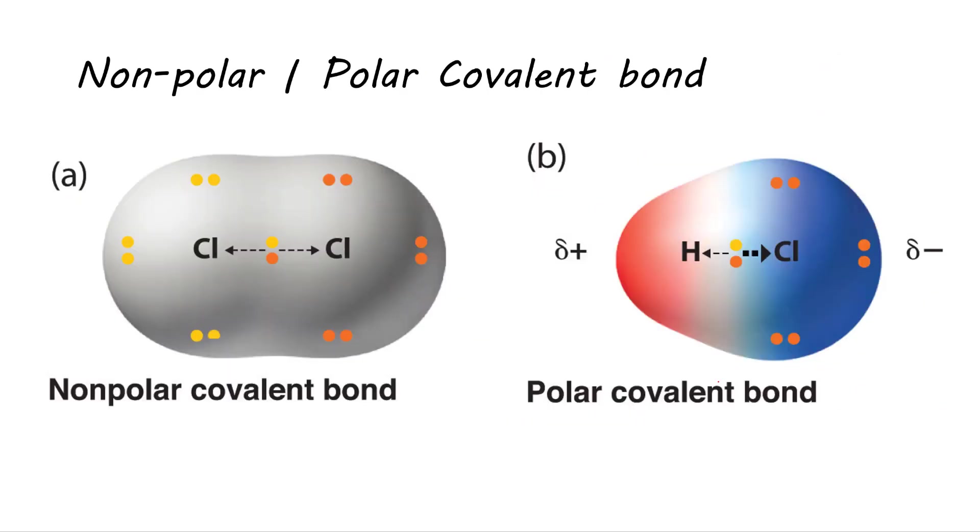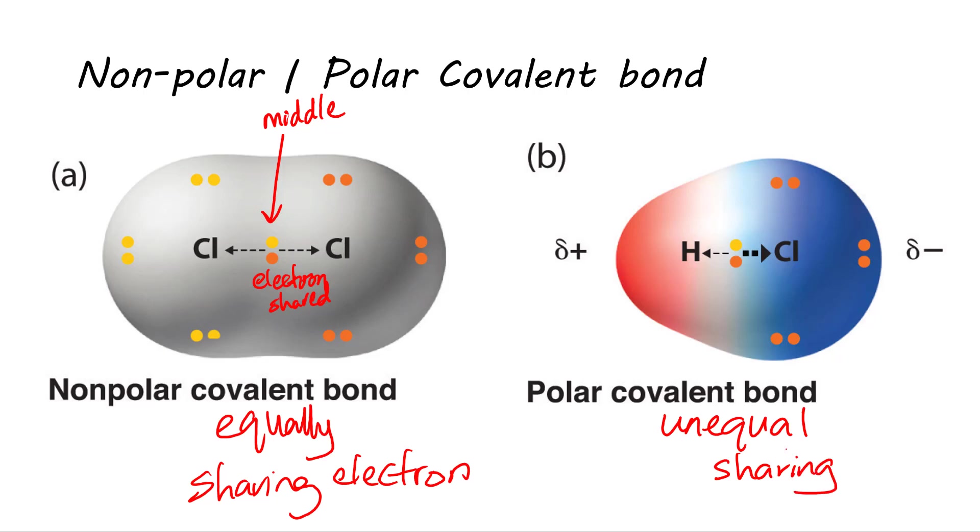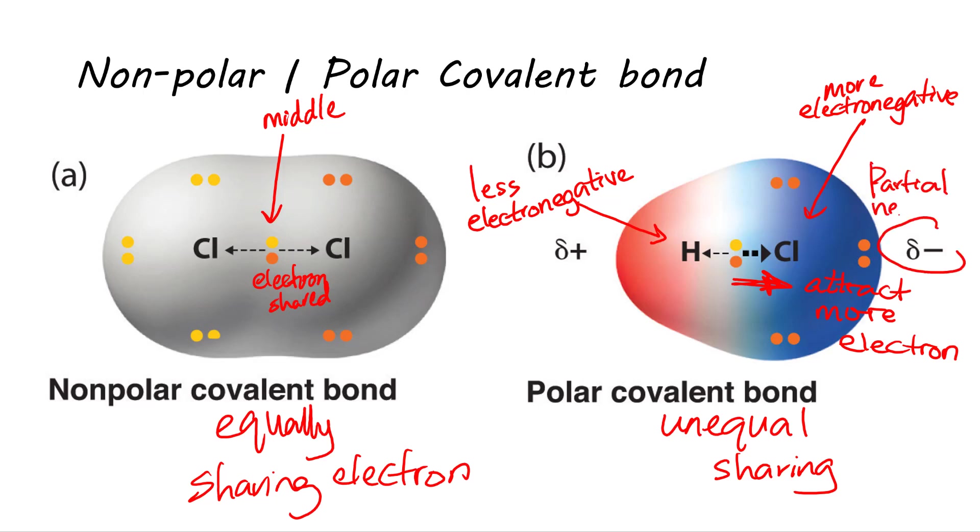A non-polar covalent bond is formed if two atoms are sharing the electrons equally, due to similar electronegativity. Because the electron is right in the middle, and neither of these atoms gets more of this electron. But if the electrons are shared unequally because of a difference in electronegativity between the two atoms, the more electronegative atom will get to attract the electrons more so than the other atom, leading to its side of the molecule to be partial negative charge, and the other partial positive charge. This unequal sharing of electrons due to the polar covalent bond will usually lead to a molecule that's polar, which means the molecule has opposite charge on its end.